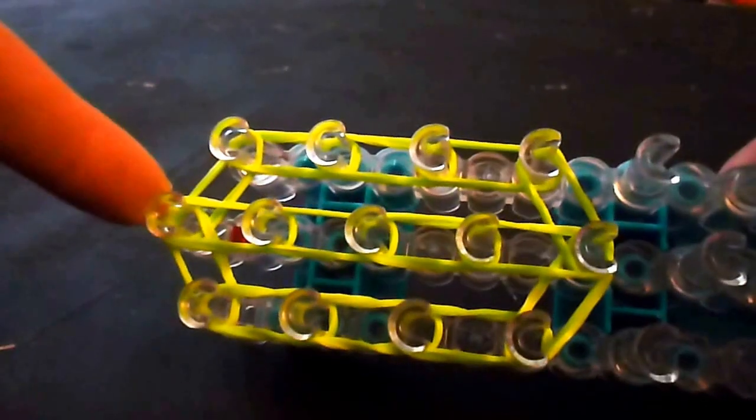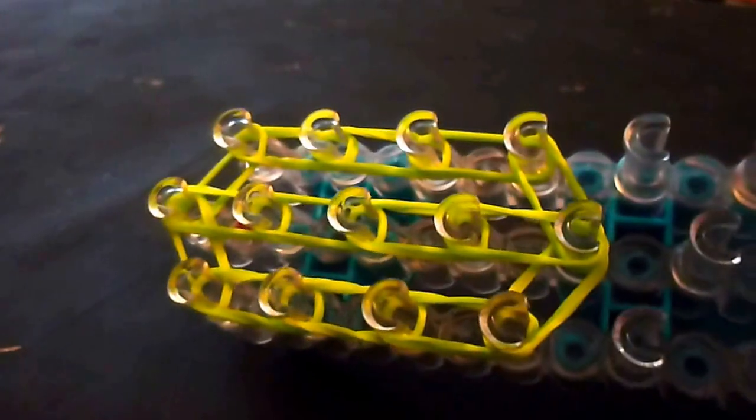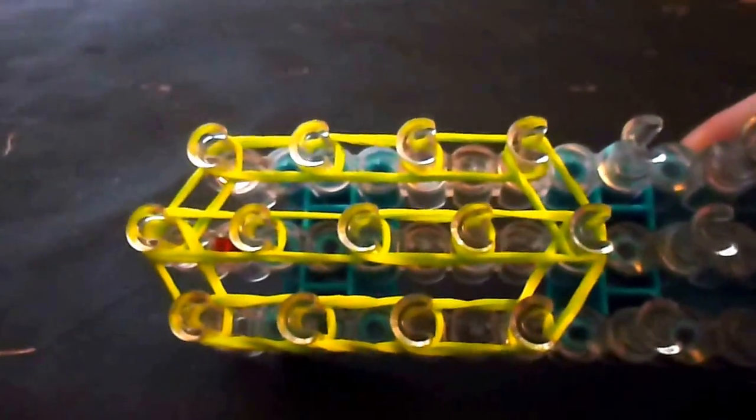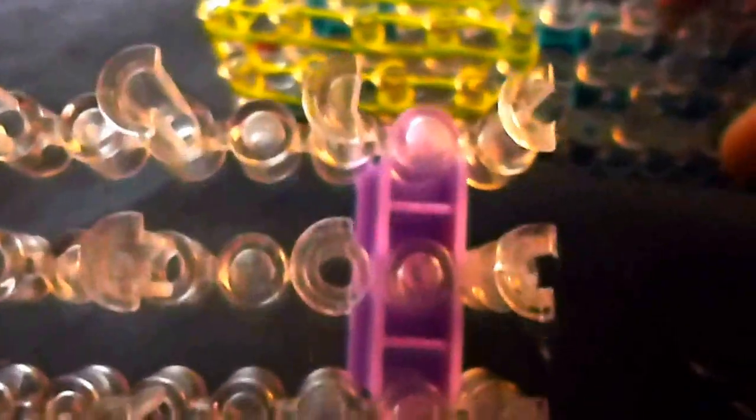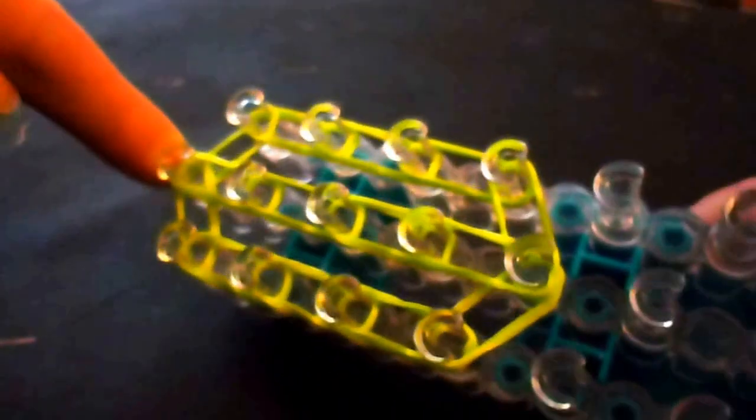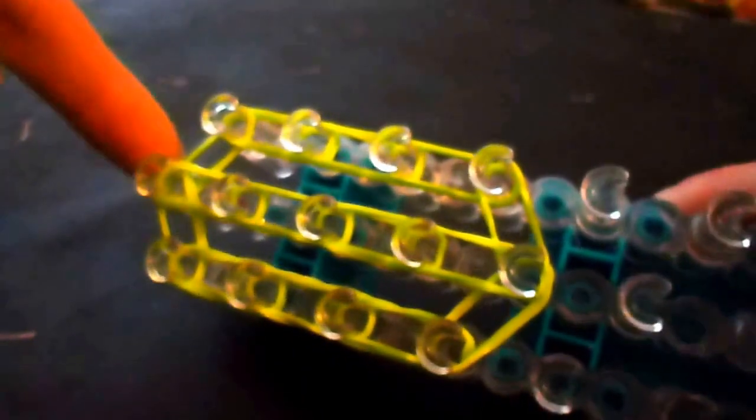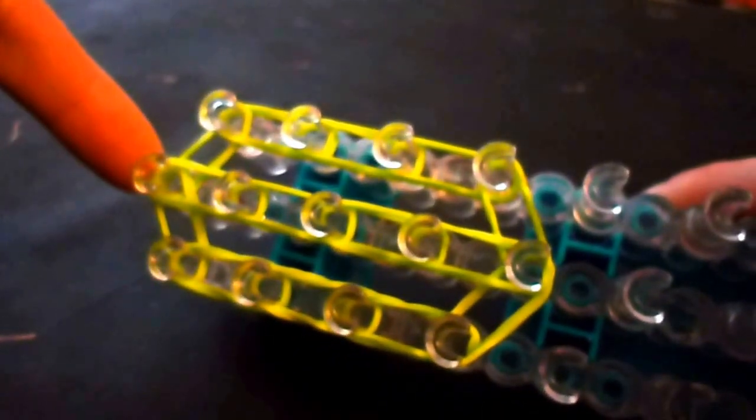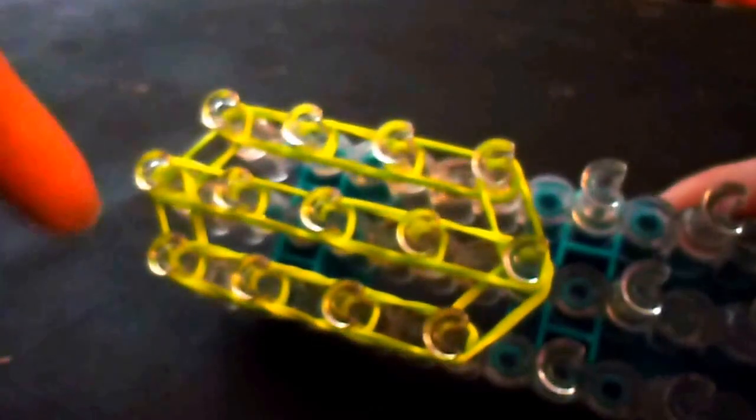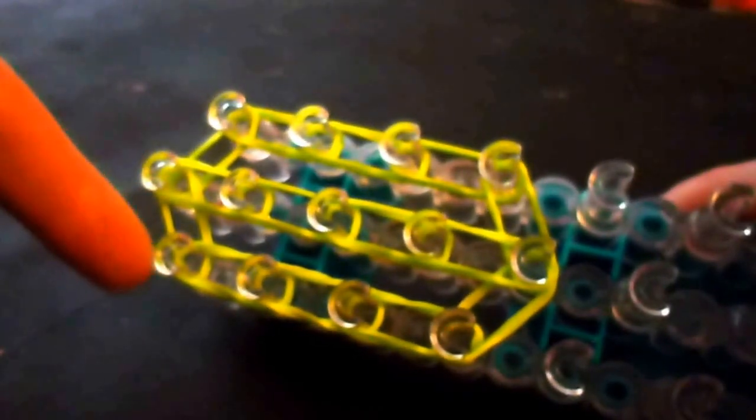We're gonna start on the face and you will need your loom in the offset configuration for this part. You might want to have a second loom handy because we'll be doing the body later as well on a flat loom. For the head we're gonna start with the offset and we're taking two green bands and going from the top middle to the top on the first on the side and the top middle to the top of the second side.